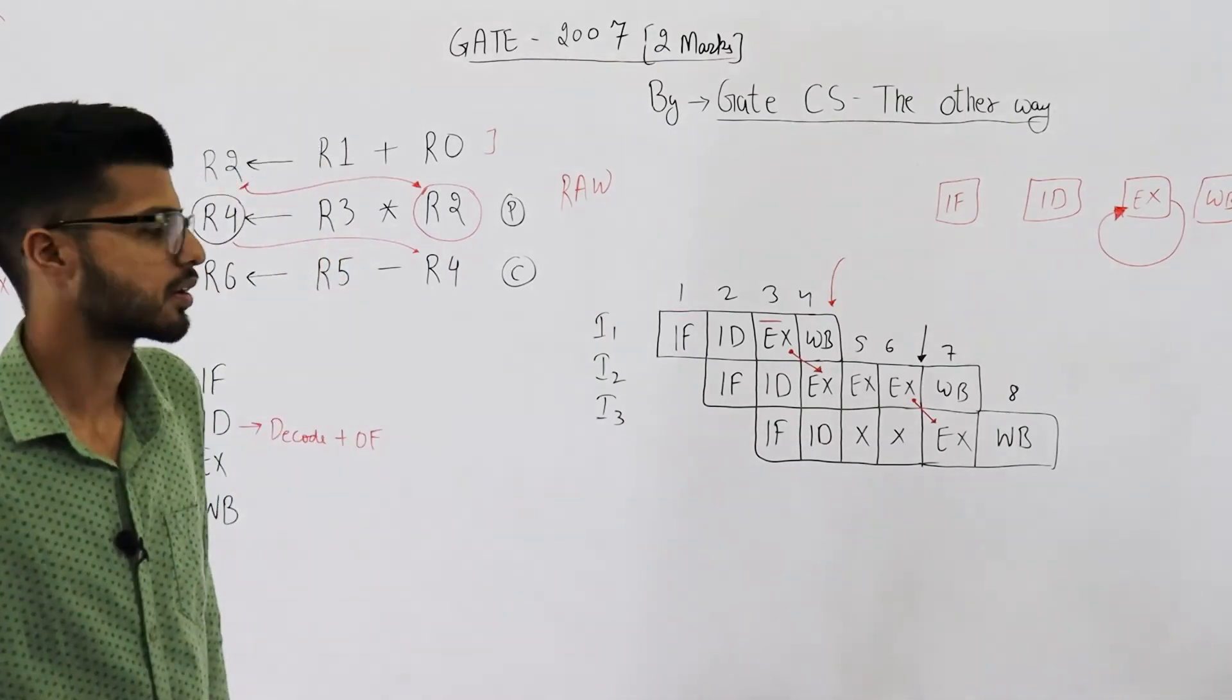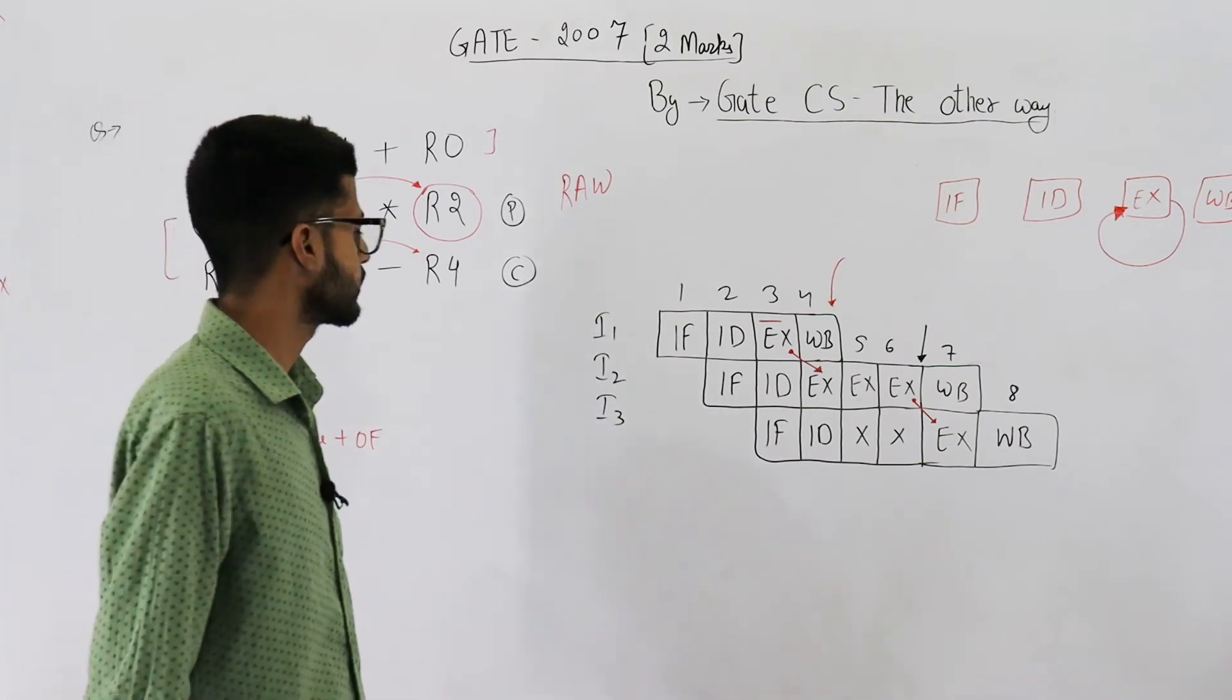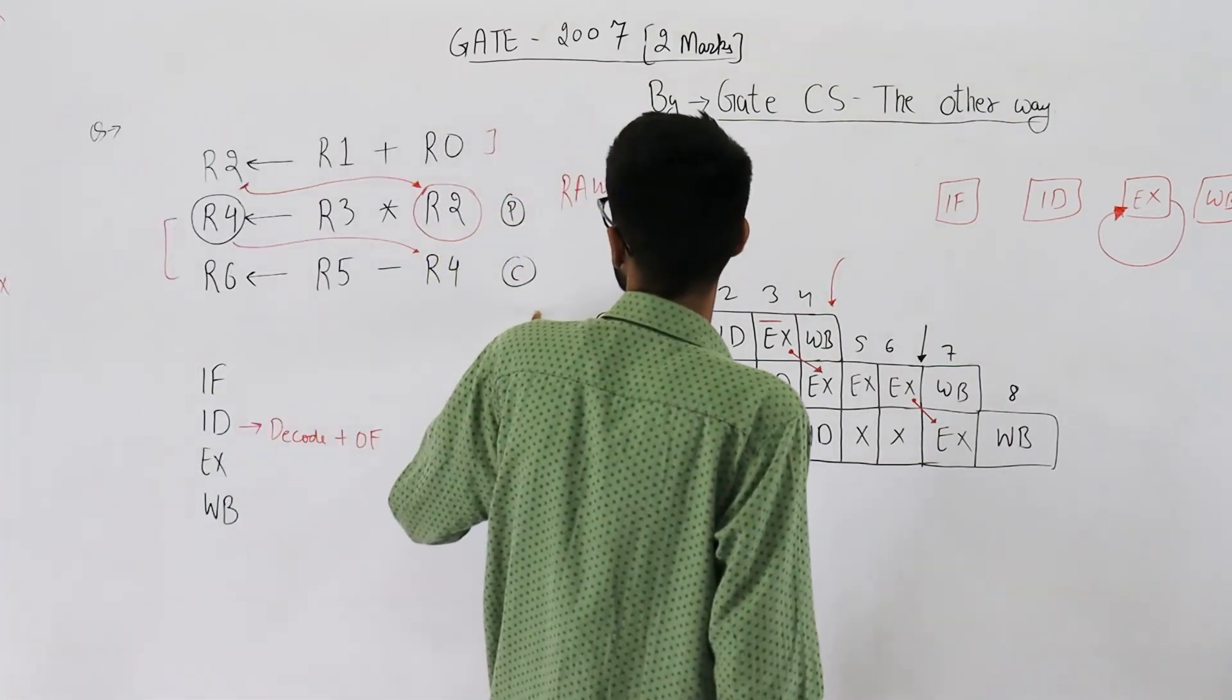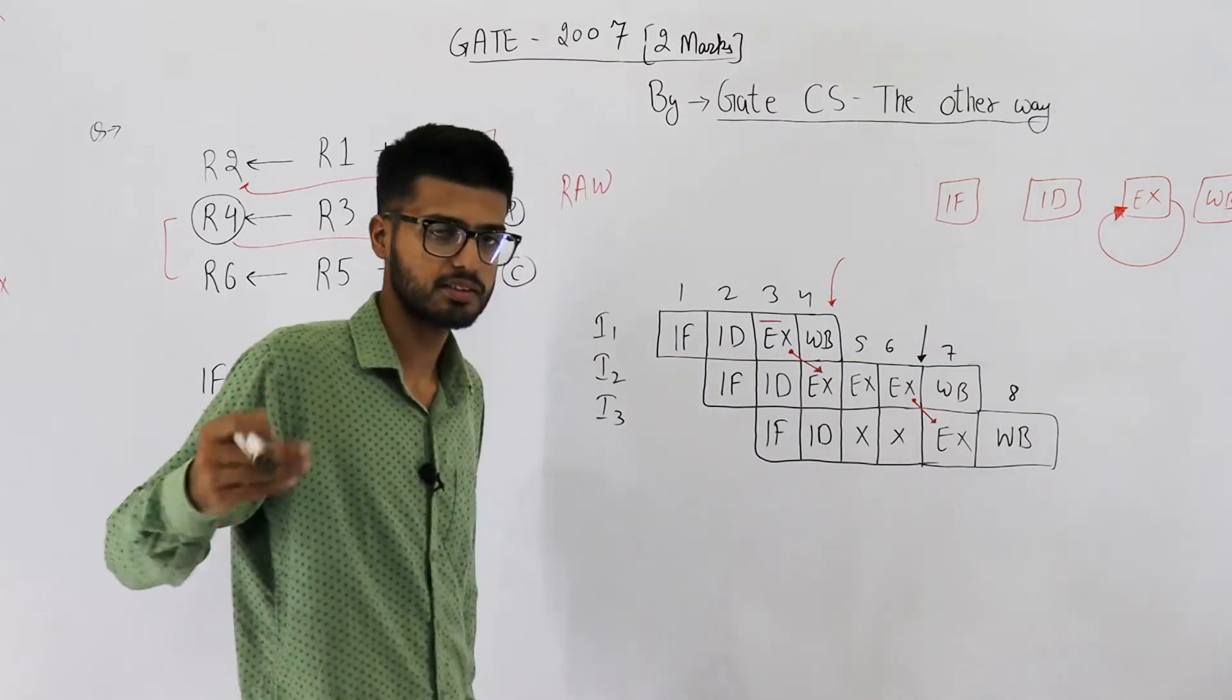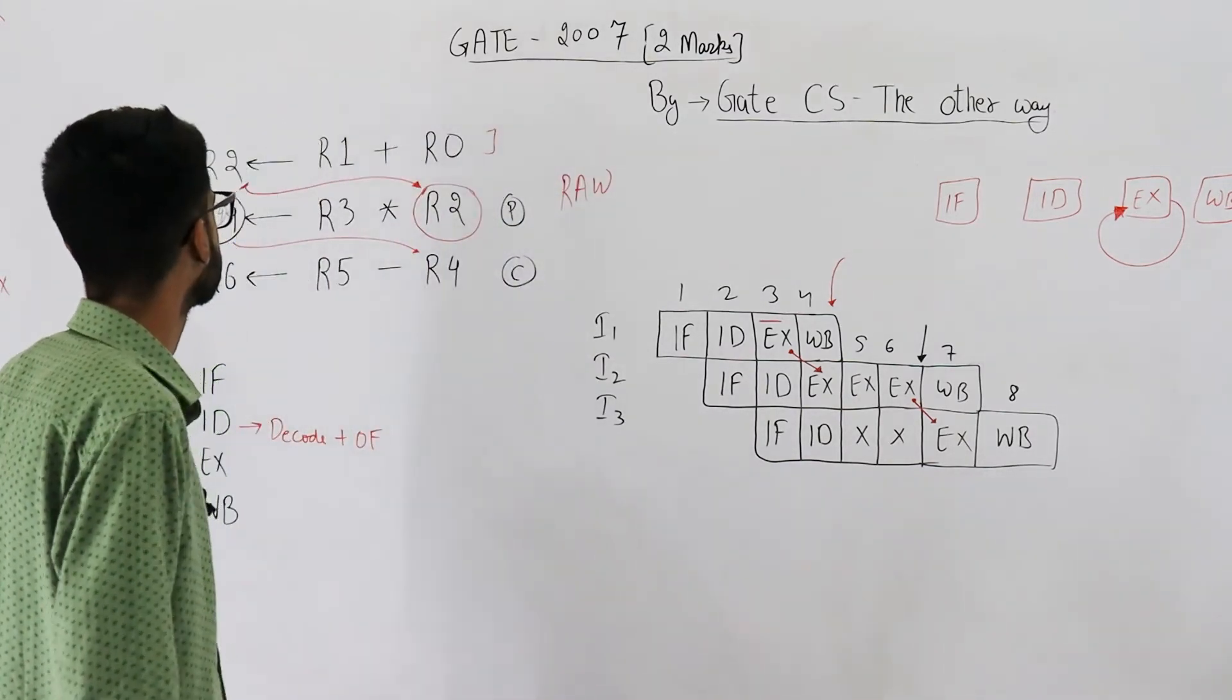Now we have a shortcut also to solve such questions. You just neglect all the dependencies, just for time being neglect all the dependencies and see how many clock cycles are required.